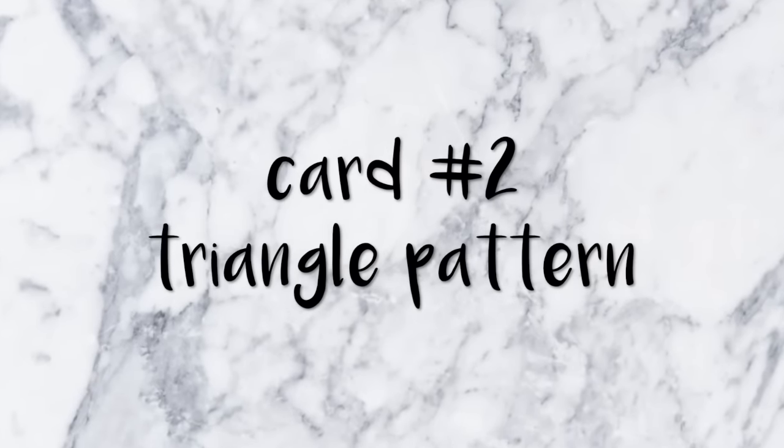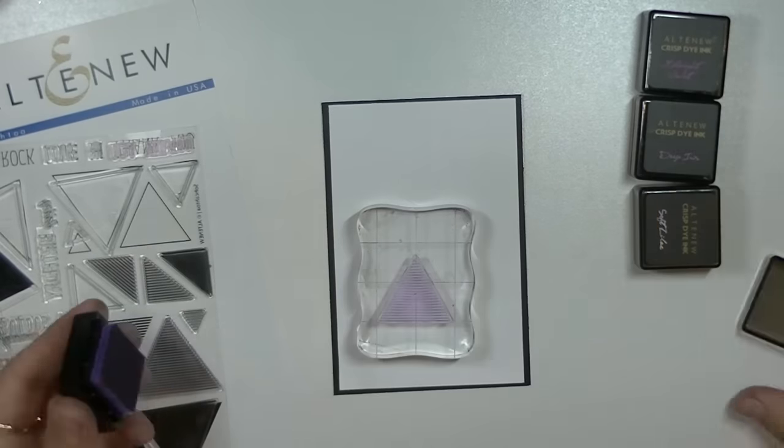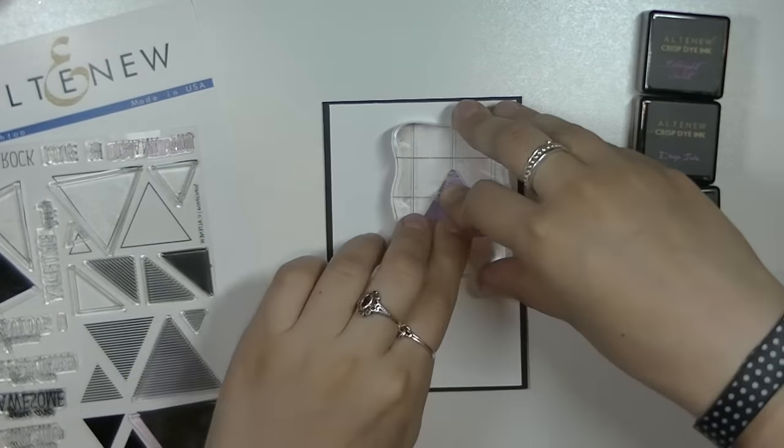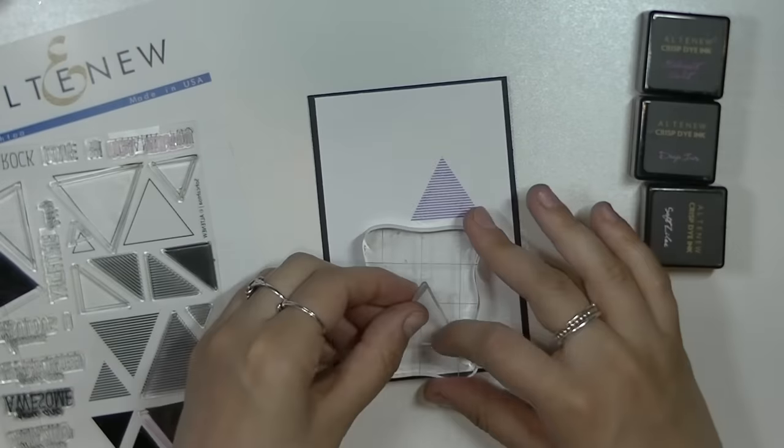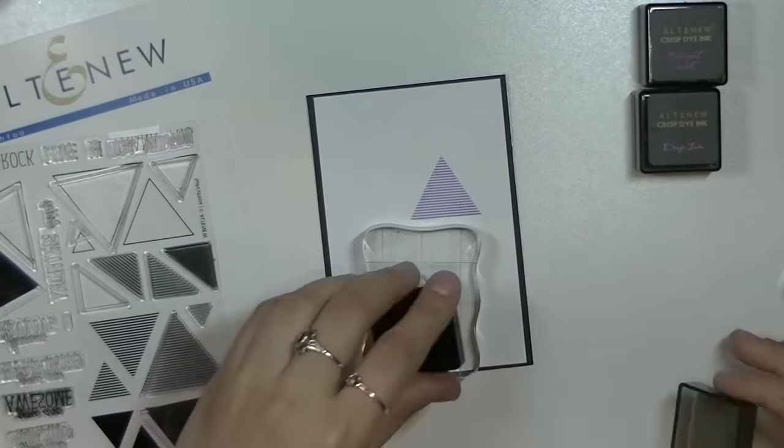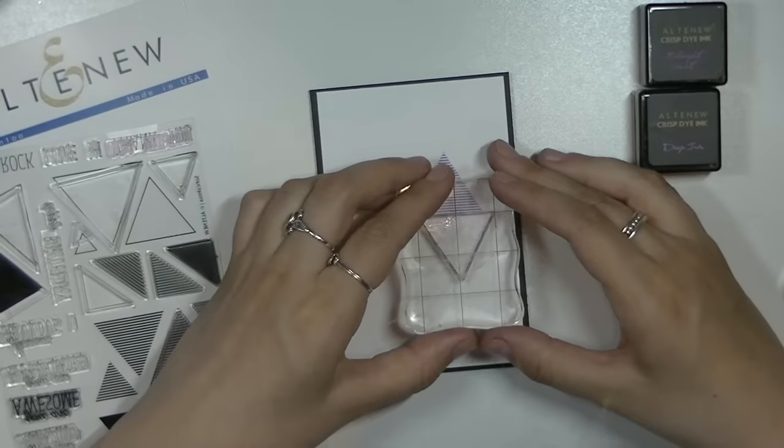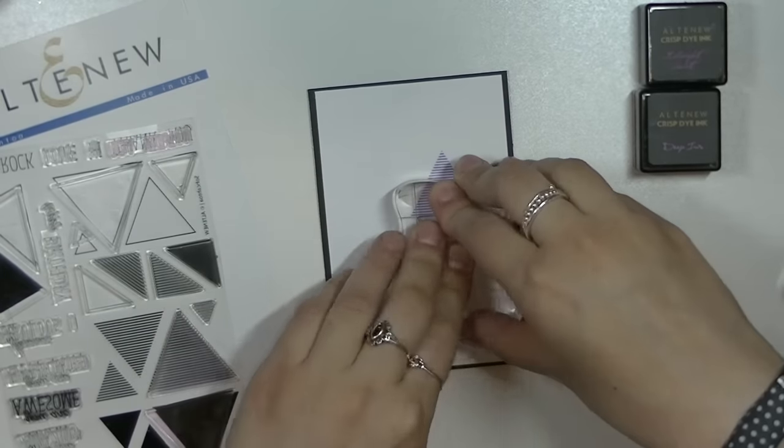For the second card I'm going to make a triangle pattern. Here I'm just using the Shades of Purple ink set and I'm loving these colors. These are dye-based ink and when they dry they're so luscious. These colors are very vibrant and beautiful. I'm using the different triangles in the set, some of the solid and some of the open triangles.